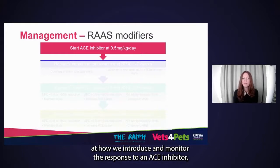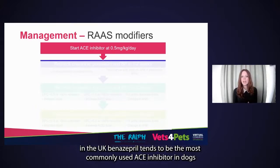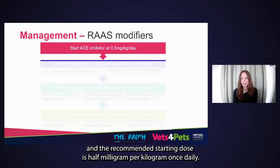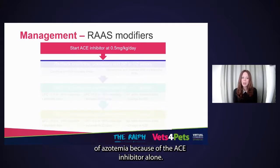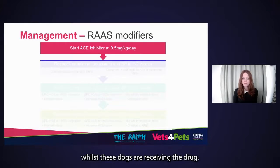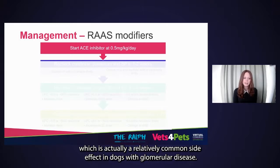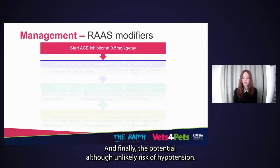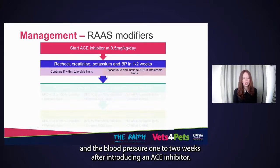Introducing and monitoring the response to an ACE inhibitor: in the UK, benazepril is the most commonly used ACE inhibitor in dogs, with a recommended starting dose of 0.5 milligrams per kilogram once daily. Whilst it is uncommon for dogs to have dose-limiting worsening of azotemia from an ACE inhibitor alone, it's still important to monitor serum creatinine. Other possible complications include hyperkalemia — a relatively common side effect in dogs with glomerular disease — and the potential risk of hypotension. It's important to reassess serum creatinine, potassium concentrations, and blood pressure one to two weeks after introducing an ACE inhibitor.